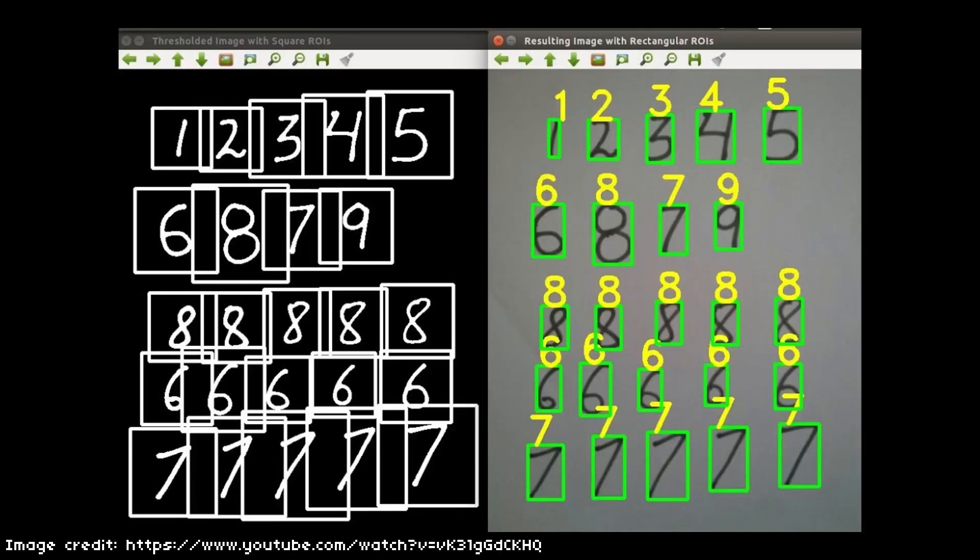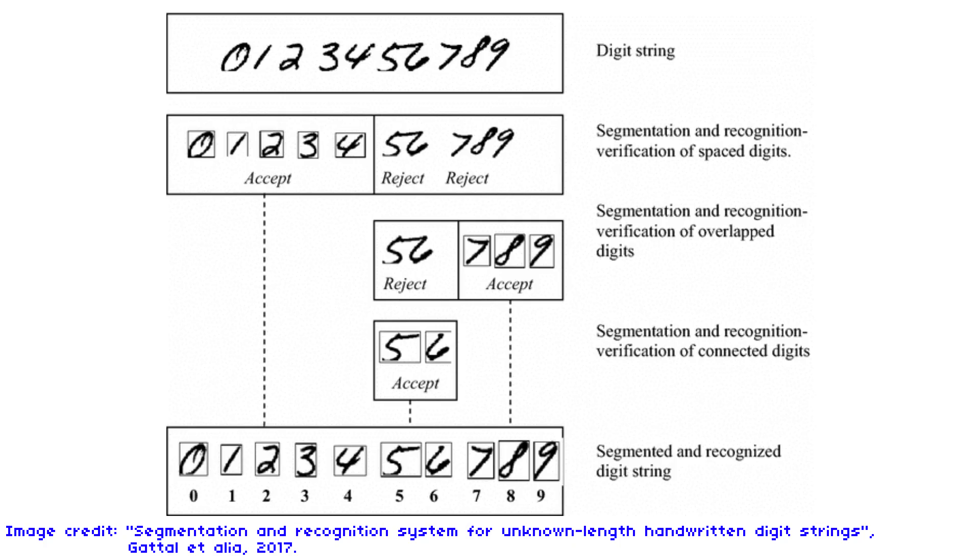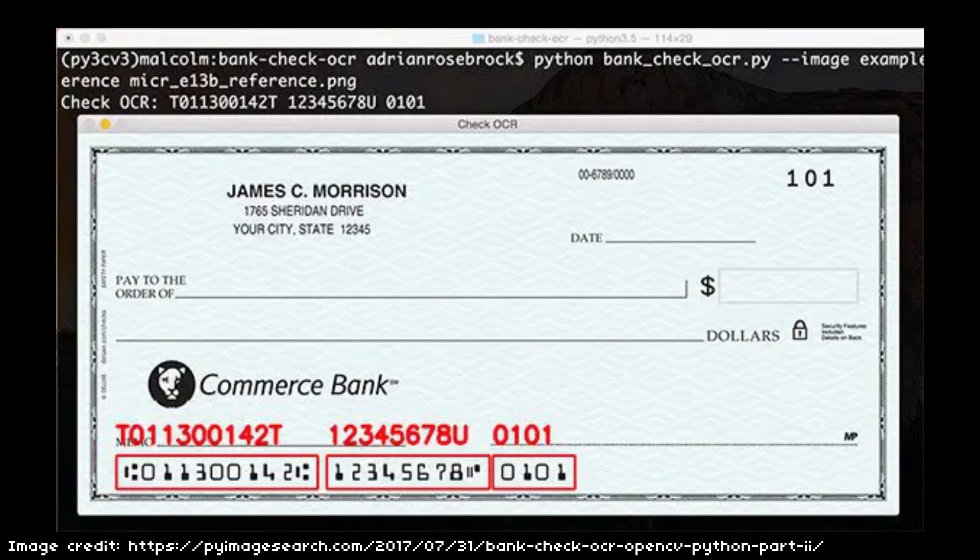Hopefully, there's a very well-known task in image recognition, identifying the handwritten digits 0 to 9. This is useful for everything from interpreting zip or postal codes on letters to reading the amount written on a check, an ancient method of transferring money for the non-American viewers.